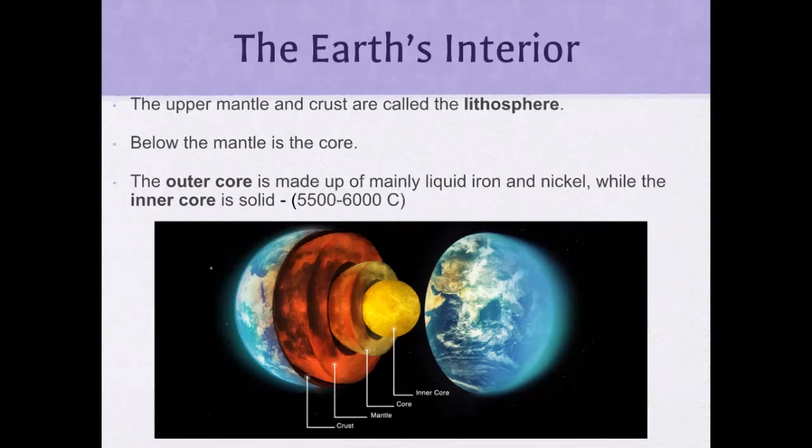The upper mantle and crust together are called the lithosphere. Below the mantle is the core. The outer core is made of mainly liquid iron and nickel, while the inner core is solid at somewhere between 5,500 to 6,000 degrees Celsius.